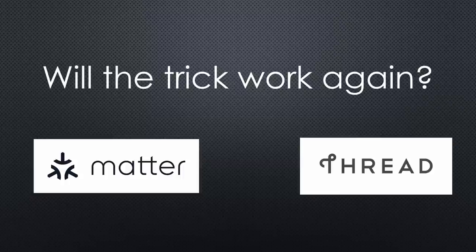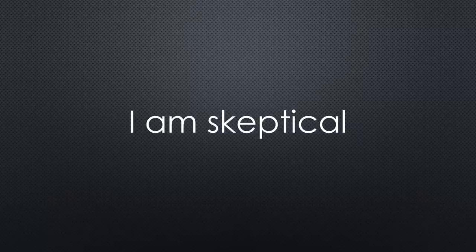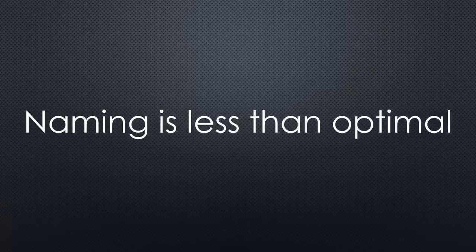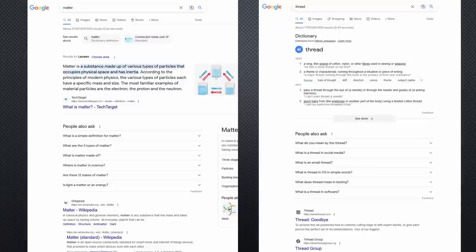We hope the trick works again because three big companies are behind the standard. I am a bit skeptical, particularly about the speed of implementation. I think these companies must significantly curb their egos to agree on a common standard. Also, the names given to these new standards could hardly be worse in the times of search engines — just search for 'matter' or 'thread' and look at the results. You get a lot of things, but not much about home automation.